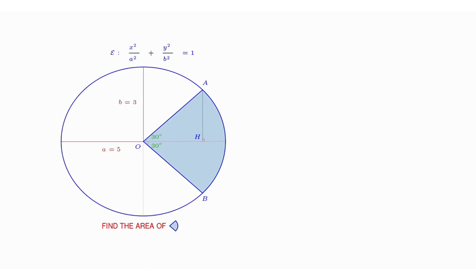Given an ellipse centered at the origin and represented by the equation x squared divided by a squared plus y squared divided by b squared equals 1, where a equals 5 and b equals 3.